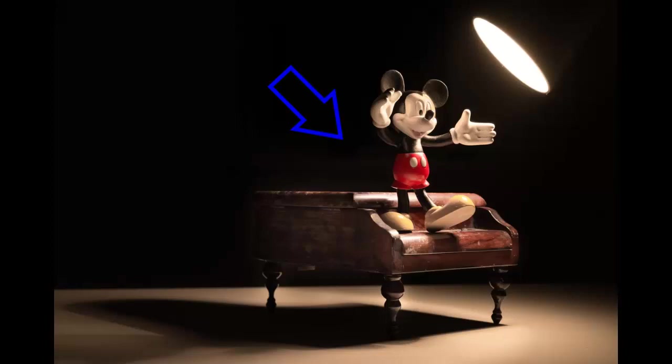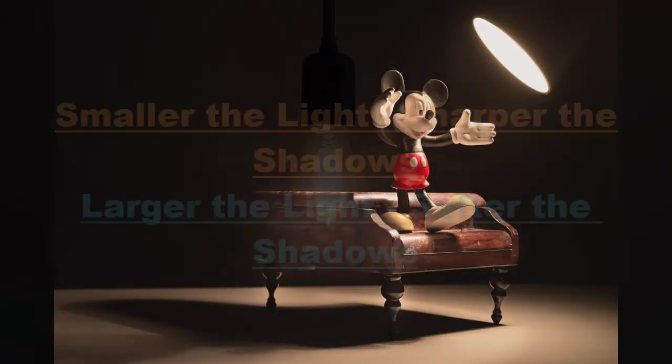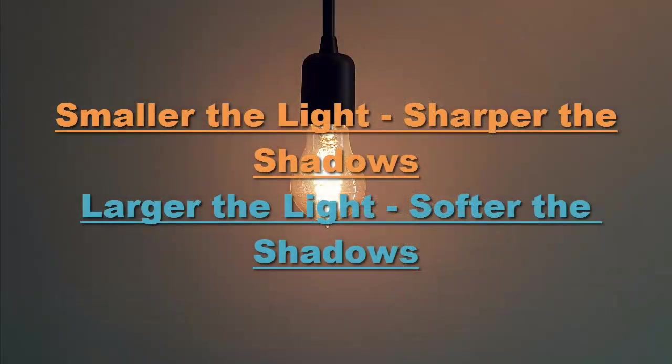Before we move any further, there is a golden rule in lighting which I always follow: smaller the light, sharper the shadows; larger the light, softer the shadows. We will see this phenomenon being repeated many times.